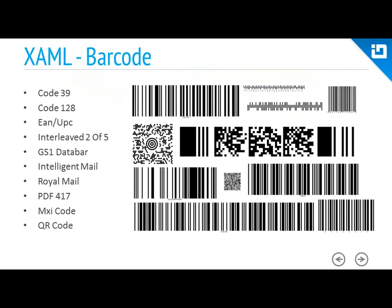The next control is our barcode. From shipping containers to medical records to a can of beans at the grocery store, barcodes have become the universal mechanism for identifying data affixed to physical assets. We support over 10 different symbologies for barcodes — Code 39, Code 128, Intelligent Mail, Royal Mail, PDF 417, QR code, and more. So no matter what barcode you need, we can cover all your barcode needs.